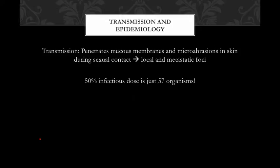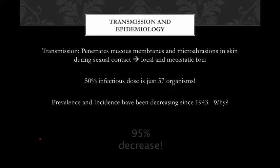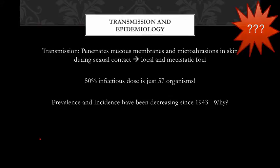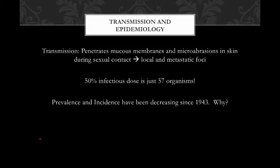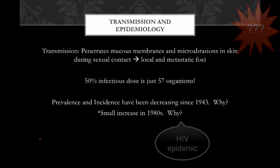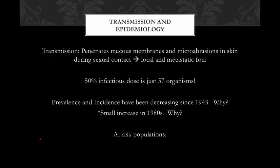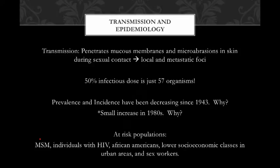Despite the high infectivity, the prevalence and incidence of syphilis has decreased 95% from 1943 to now — because penicillin became widely available in 1943. The early stages of syphilis remain exquisitely sensitive to penicillin. There was a small increase of cases in the 1980s due to the HIV epidemic. Currently, most cases in the U.S. affect men who have sex with men and individuals with HIV, as well as African Americans, lower socioeconomic urban populations, and sex workers.